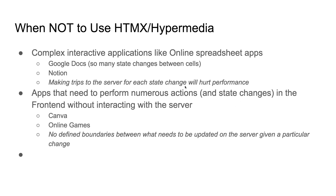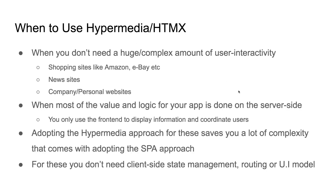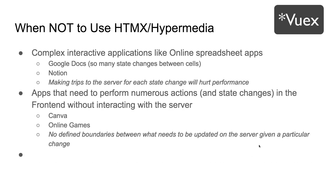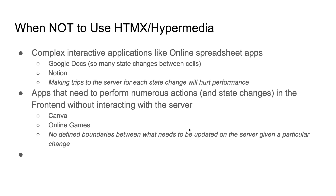To wrap up: use hypermedia and HTMX when you don't need huge complex interactions and when the value and logic of the app is mainly on the server side — it saves you a whole lot of complexity, no Redux, no RxJS, no client-side state libraries. But when you're building complex applications involving a lot of interactivity defined by the user — like Google Docs, Google Sheets, Notion, Canva, or online games — stick with the SPA approach, because those frameworks are built to deal with that complexity.